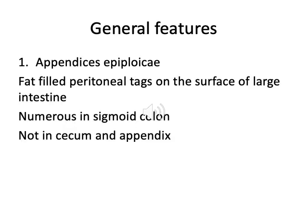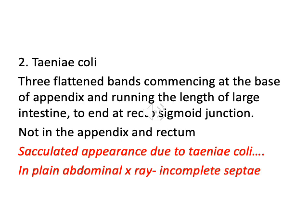When we talk about the general appearance of the large intestine, there are two main structures to note. The first is the appendices epiploicae, which are fat-filled peritoneal tags on the surface of the large intestine. They are numerous and can be seen especially on the sigmoid colon, but not in the cecum. The second feature is the tenia coli — three flattened bands commencing at the base of the appendix and running the length of the large intestine to end at the rectosigmoid junction. These tenia coli are not seen in the appendix and rectum.